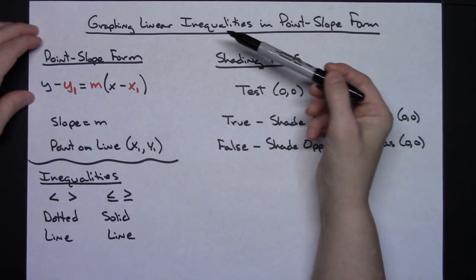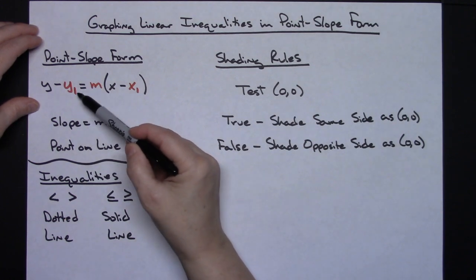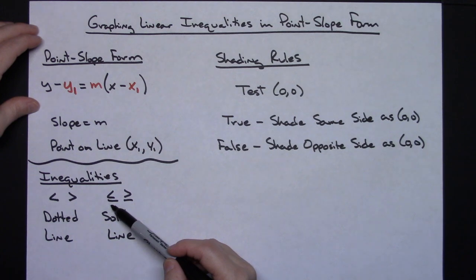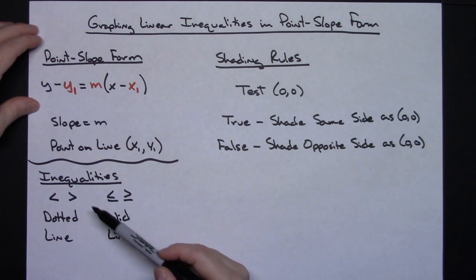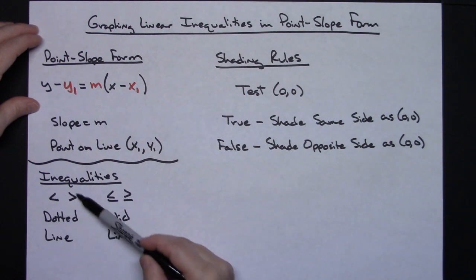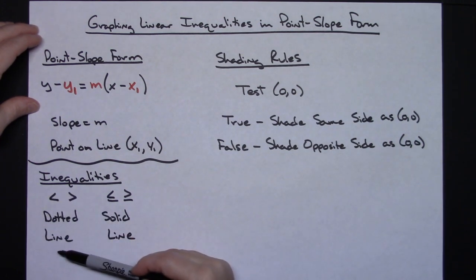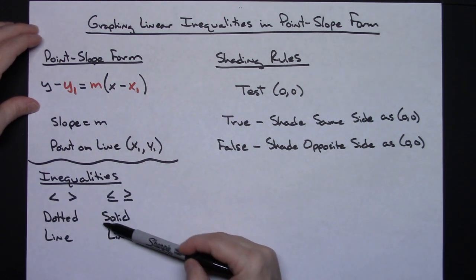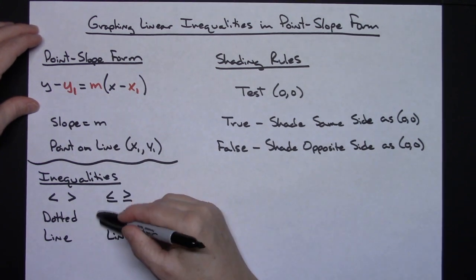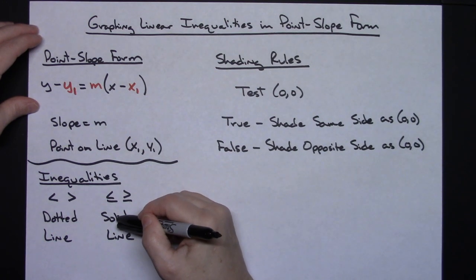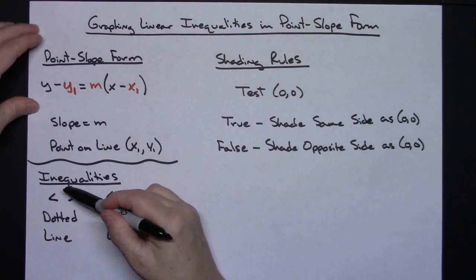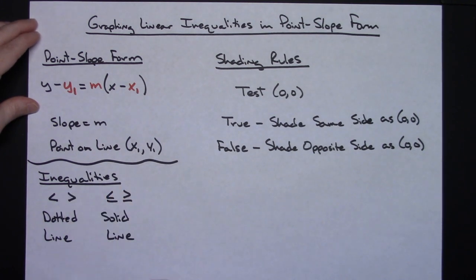When doing this with inequalities, instead of an equal sign we'll have a less than, greater than, less than or equal to, or greater than or equal to sign. When graphing inequalities, if it's strictly less than or greater than we use a dotted line. When it's less than or equal to or greater than or equal to, we use a solid line. A solid line means the points on the line are part of the solution; a dotted line means they are not.